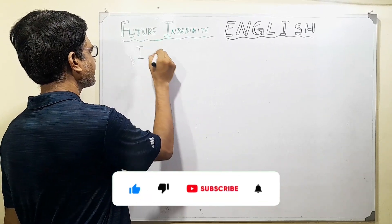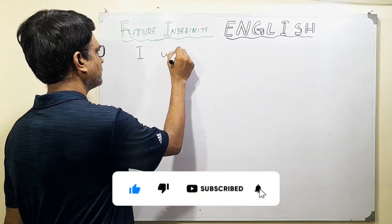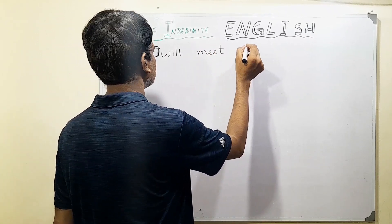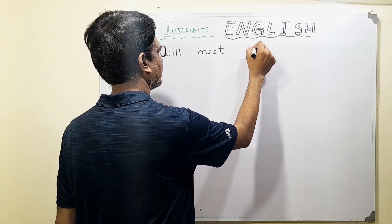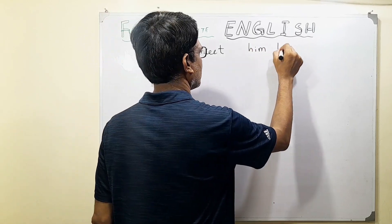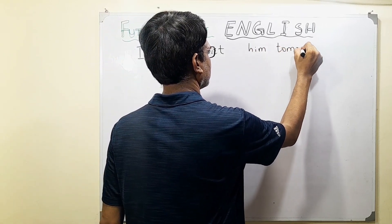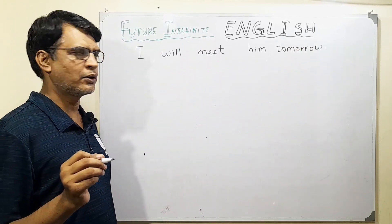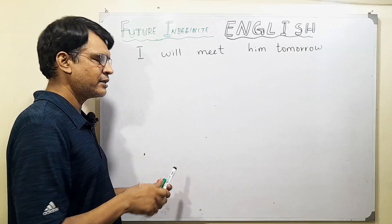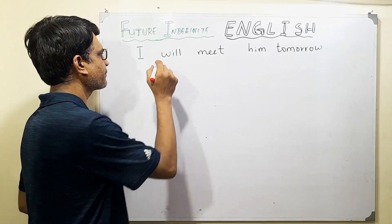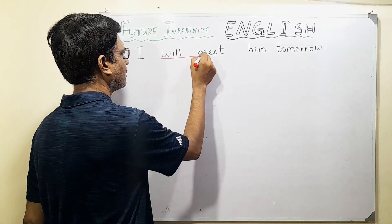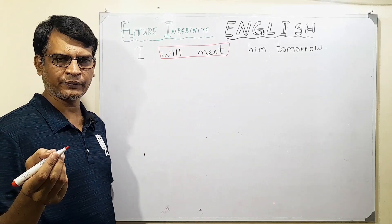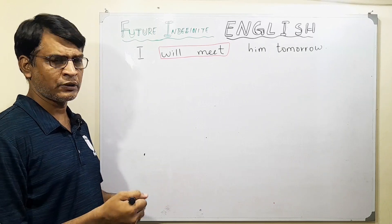For example: 'I will meet him tomorrow.' The idea is that for future indefinite, we are using 'will' with the first form of verb. That's the key idea.